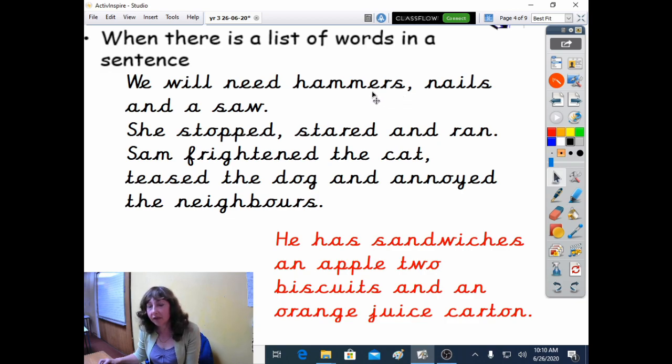So in the list of items, the comma is going to separate the hammers from the nails. And it just tells us to take a little pause as we are reading or speaking.